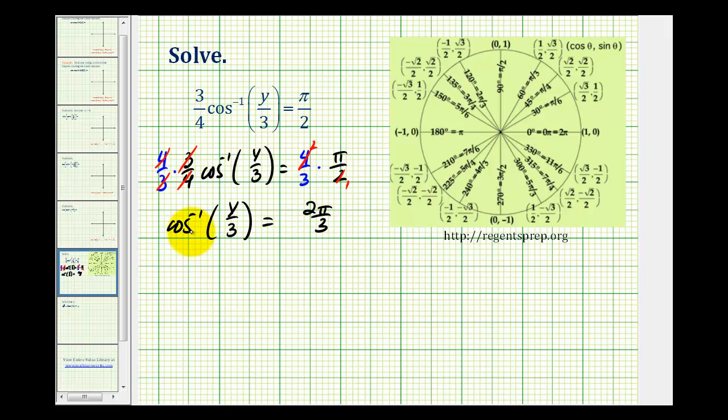Now to undo this inverse cosine, we can take the cosine of both sides of the equation. So on the left side, cosine inverse cosine of y over three—these two functions are inverses of one another and undo each other. So we're left with y divided by three is equal to cosine of two pi over three.